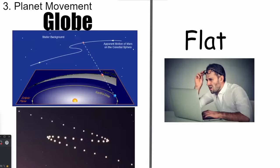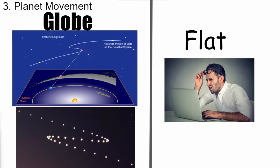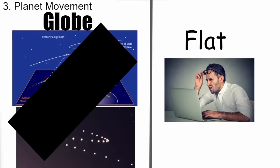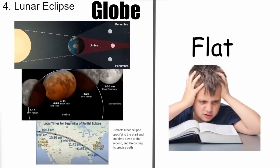On planet movement: assuming we're on a globe orbiting a star with other planets also orbiting, we would predict specific motions including retrograde — a very specific pattern. Flat Earth would say they don't know what planets are, just lights moving across the sky, with no way to predict their behavior. We do observe retrograde motion exactly as the globe model predicts.